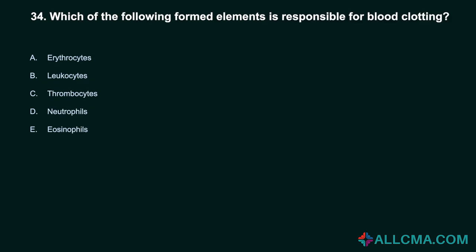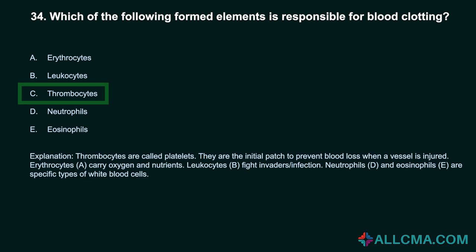Question 34: Which formed element is responsible for blood clotting? a) erythrocytes, b) leukocytes, c) thrombocytes, d) neutrophils, e) eosinophils. Correct answer: C, thrombocytes. Thrombocytes, called platelets, are the initial patch to prevent blood loss when a vessel is injured. Erythrocytes carry oxygen and nutrients. Leukocytes fight infection. Neutrophils and eosinophils are specific types of white blood cells.